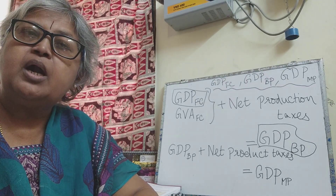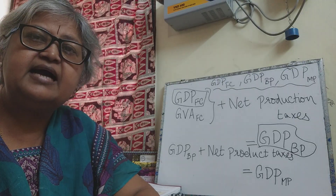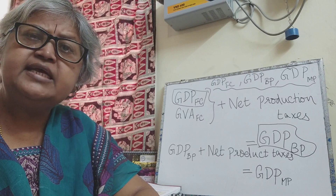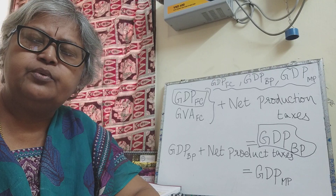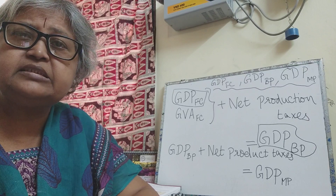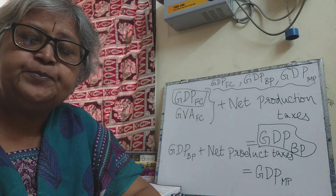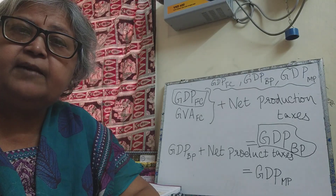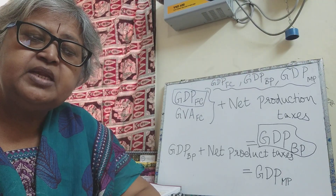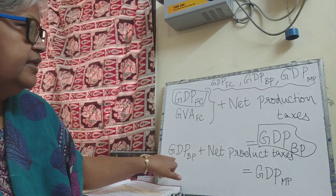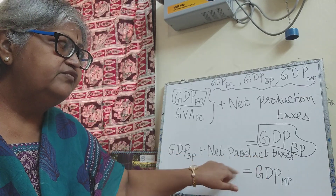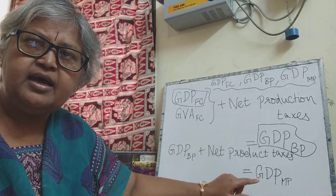Similarly, there is the product subsidy, which is monetary support offered by the government to firms to continue producing socially useful products. Common examples of product taxes are excise tax, sales tax, entertainment tax, or more commonly GST. These indirect taxes on products are product taxes. The difference between product tax and product subsidy gives net product taxes. So gross domestic product at basic price plus net product taxes gives GDP at market price.